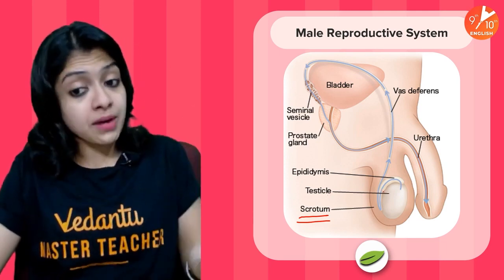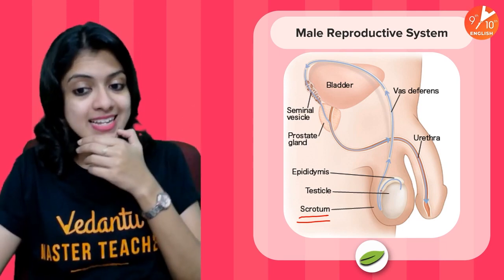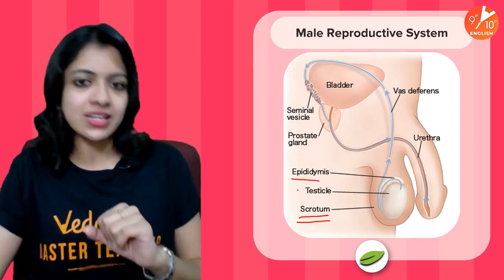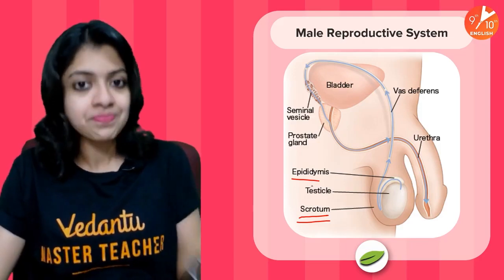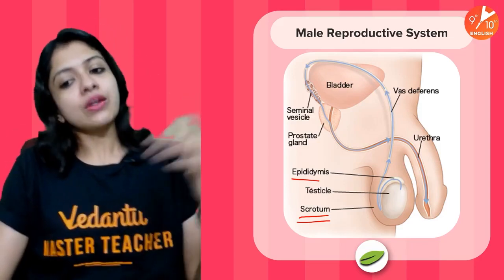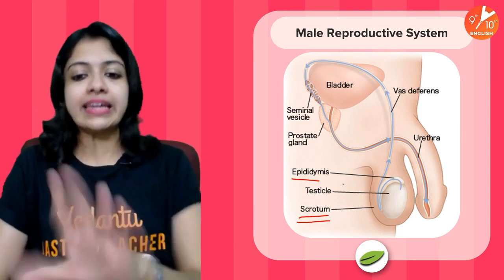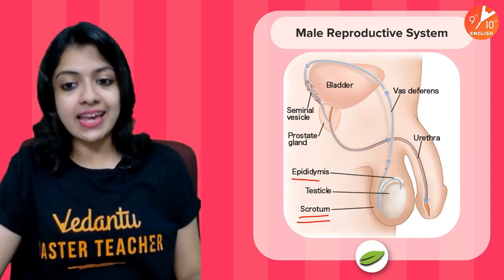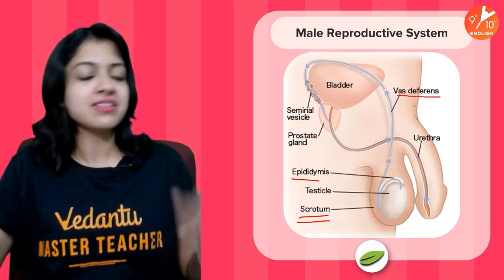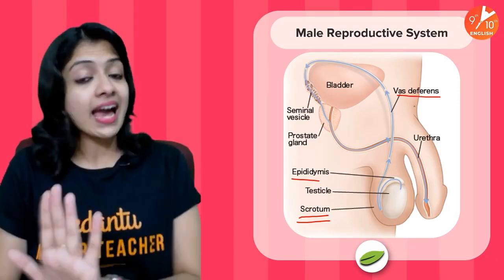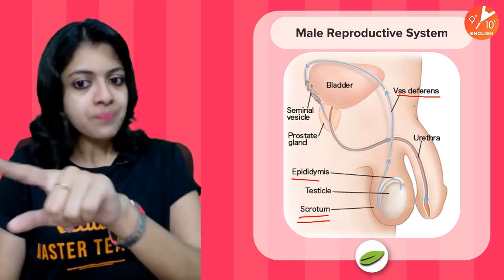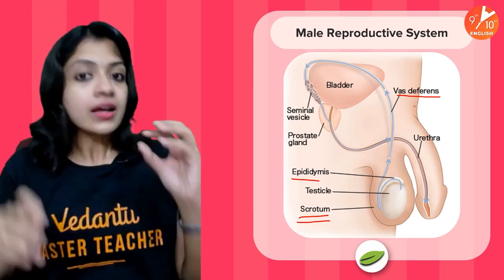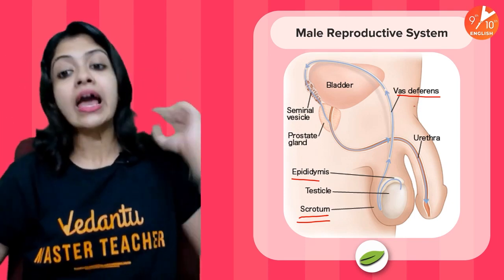The sperm produced by the testes are temporarily stored in a structure called the epididymis until they undergo maturation and are ready for release. Once sperms are mature, they leave the epididymis and enter the tube called vas deferens. There is a pair of them, but in this side view you can see them clearly; a front view would show two testes and a pair of vas deferens as well.